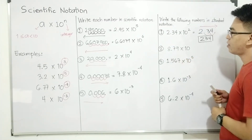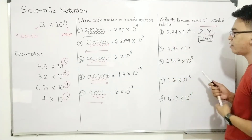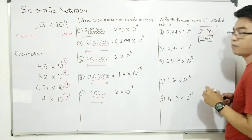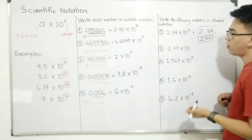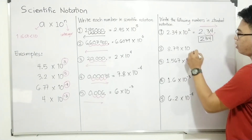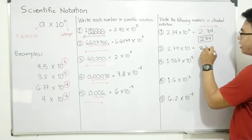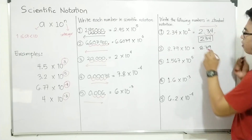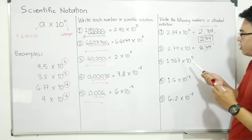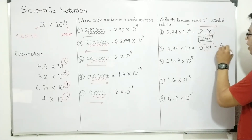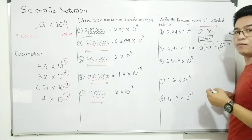For item number 2, we have 8.79 times 10. The exponent here is an invisible 1 — if you don't see an exponent on 10, it is automatically 1. So you have 8.79, and you move from left to right 1 unit. The correct answer for item number 2 is simply 87.9.